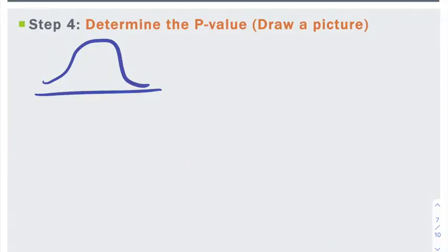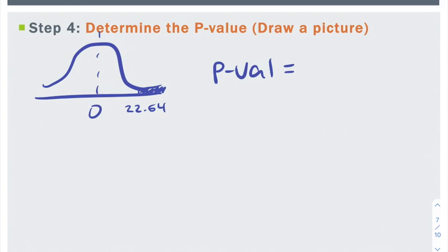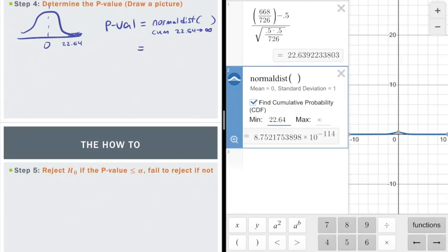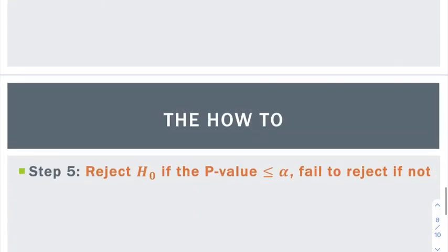As always, we're going to draw a picture. The middle number is going to be 0 and we're going to put that test statistic on the x-axis. I shaded to the right because my alternative hypothesis is greater than. Since this test statistic was a z, we're back to using normalcdf, going from 22.64 to infinity. We're getting another extremely small p-value. Unless you feel like writing out 113 zeros before a number, we'll just call this zero plus.